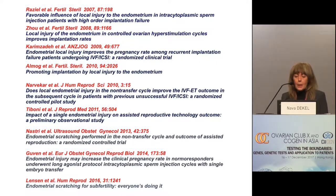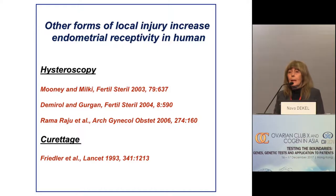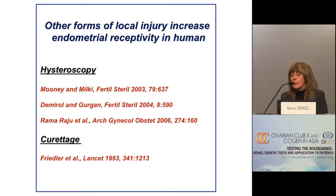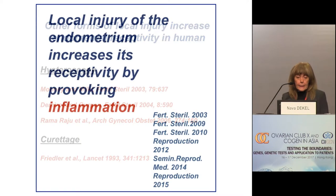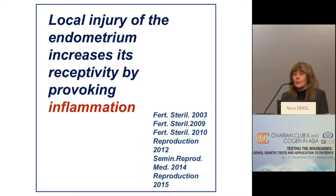These findings were later confirmed in several other IVF clinics worldwide — a partial list is presented here from 2007 up to 2016. We also found that other forms of local injury such as hysteroscopy or curettage also increase endometrial receptivity in humans according to these publications. We concluded that local injury of the endometrium increases its receptivity by provoking implantation.